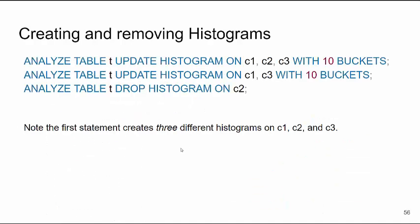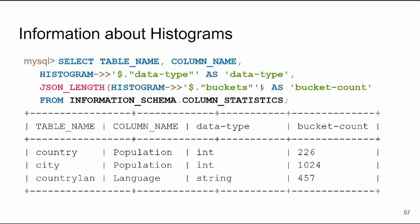Histograms are easy to create: ANALYZE TABLE t UPDATE HISTOGRAM ON col1, col2, col3 WITH 10 BUCKETS. After changes, you can update specific column histograms or drop them on columns you no longer need. For more information, query the information_schema column_statistics table — it will tell you the column names with histograms, the type of data in the histogram, and the bucket count.